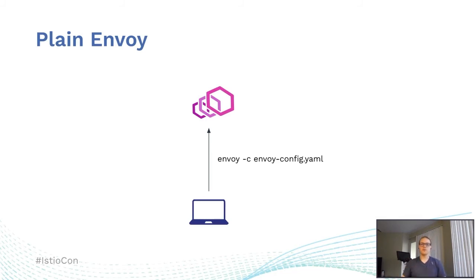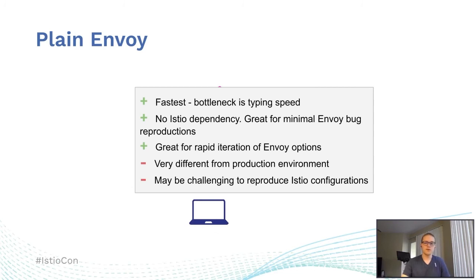All these other examples were basically just variations of Kubernetes, Istio, and the proxy deployed in different places, but we can do some more interesting setups. If we're just testing what Envoy configuration does, it can be really quick to just run Envoy directly. Envoy can take a plain YAML configuration file — similar to the output of the config dump from Envoy — and run that directly. In this case, there's no Kubernetes or Istio involved, which is super fast. Because there's no Istio dependency, it's also really great for minimal Envoy reproductions, especially for posting issues to Envoy.